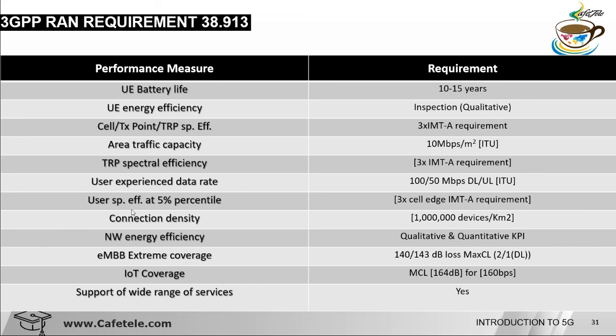User spectral efficiency at the 5th percentile is 3 times the IMT Advanced requirement. Spectrum efficiency means the data throughput per hertz of spectrum per cell, or per unit of radio equipment. Connection density is 1 million devices per square kilometer. Network energy efficiency is a quality and quantity KPI that depends on utilization.